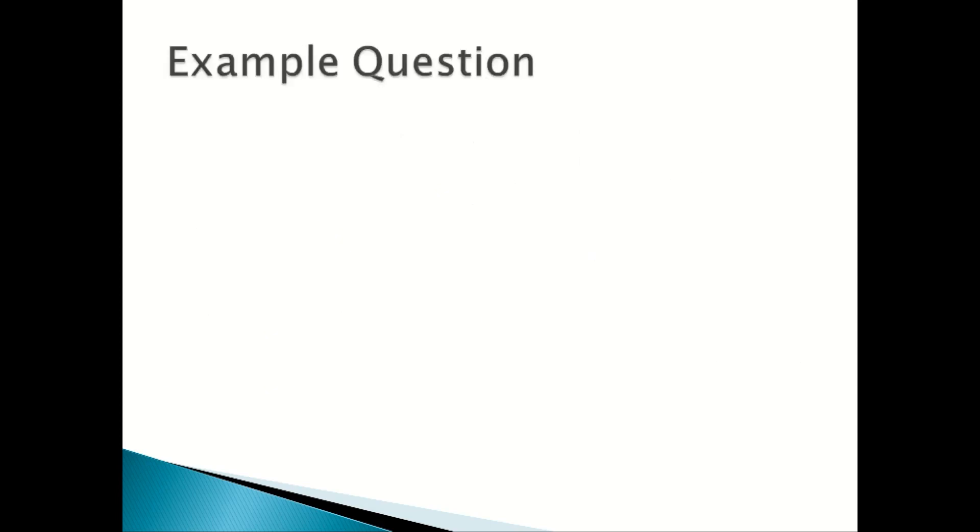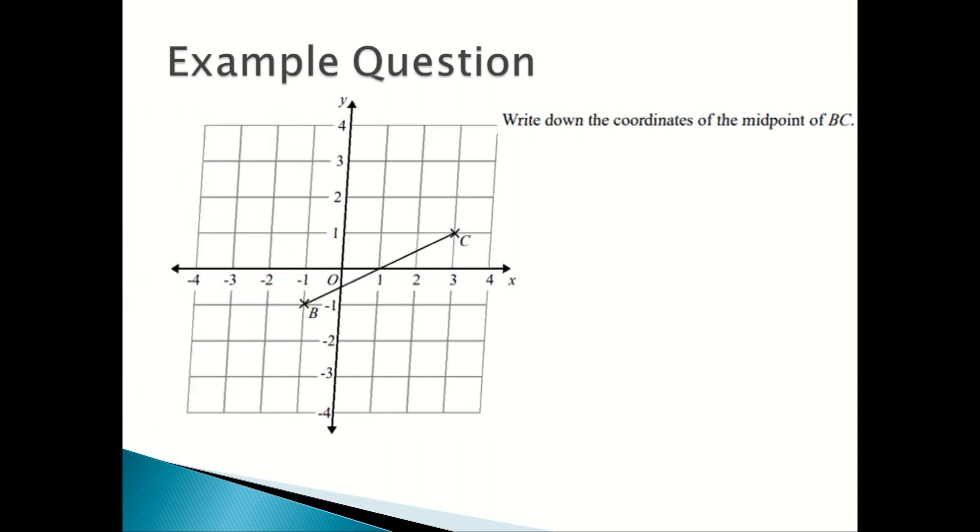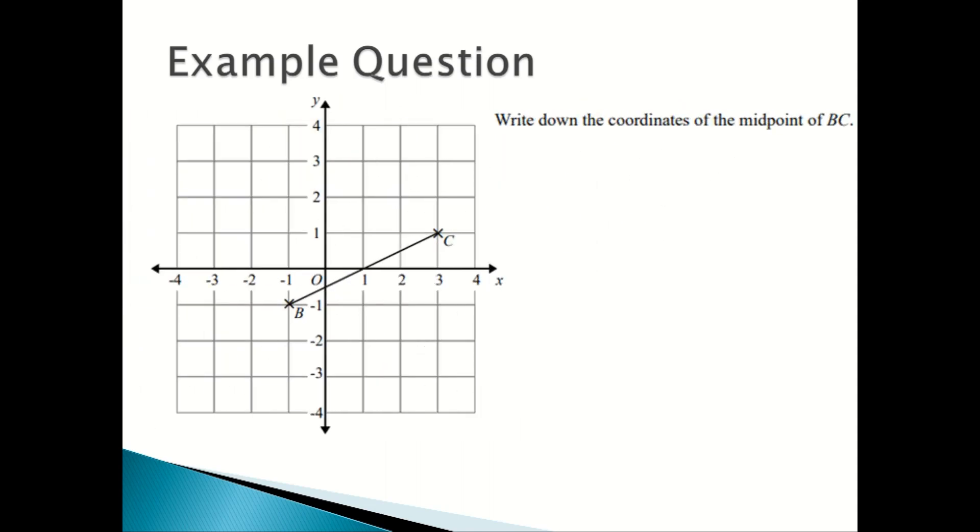Now we're going to look at an example question. Write down the coordinates of the midpoint of BC. First, you write down the coordinates of B and C. The coordinates of B is (-1, -1) and the coordinates of C is (3, 1).